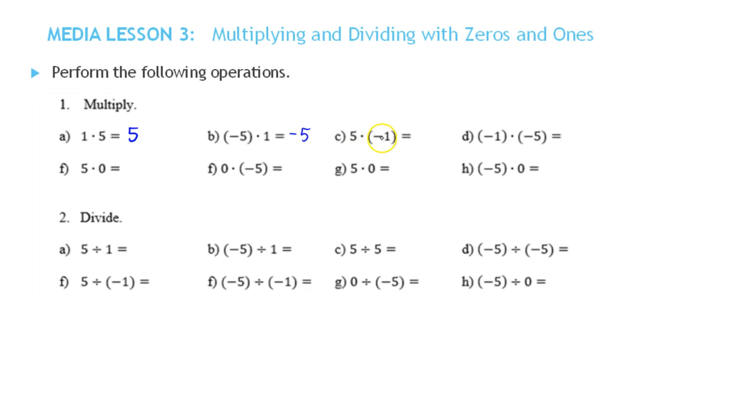What about 5 times negative 1? Well, we said to multiply numbers, you multiply their absolute values, and if their signs are different, then their answer is negative. So even though it's the 1 that's negative here, 5 times negative 1 equals negative 5. Negative 1 times negative 5, multiply their absolute values. 1 times 5 is 5. If the signs of the numbers are the same, the result is positive. So this is just 5.